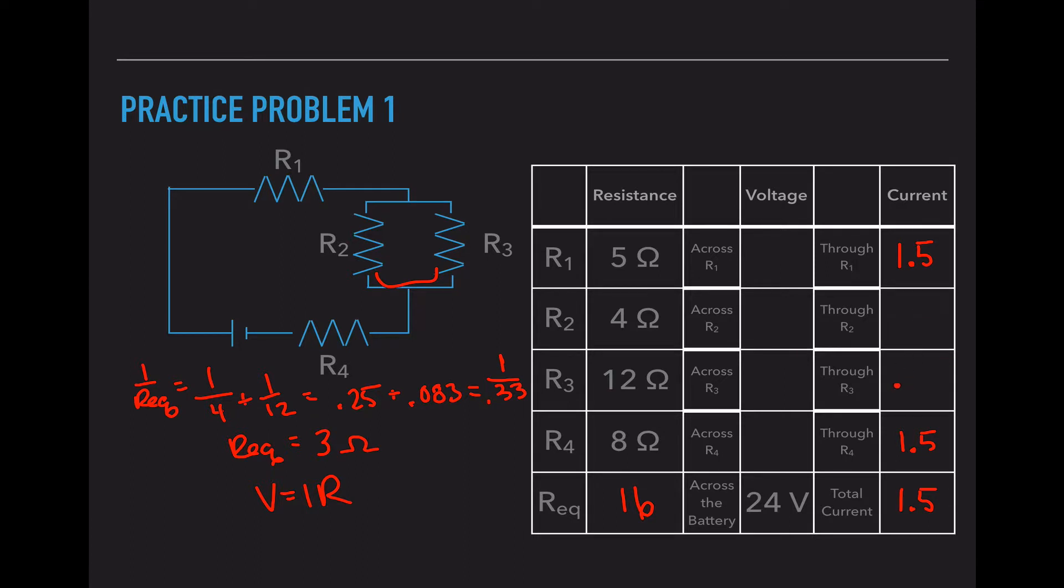Before I can figure these out, I need to know another variable for R2 and R3. So instead, let's solve for something that I can solve for. I can find V by taking the current and the resistance at R1 and multiplying them together. So 1.5 times 5 is 7.5 volts. I can do the same thing for R4. 1.5 times 8 is 12 volts.